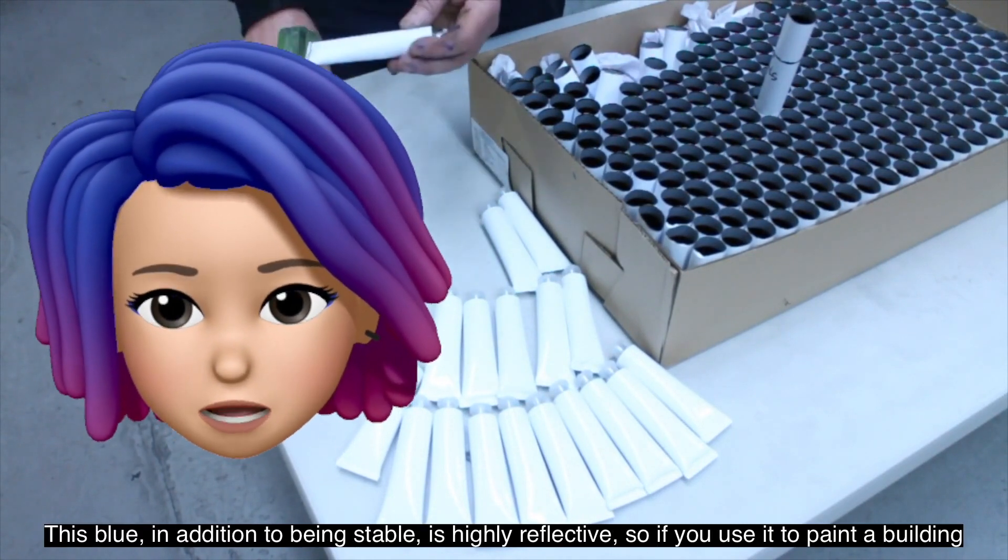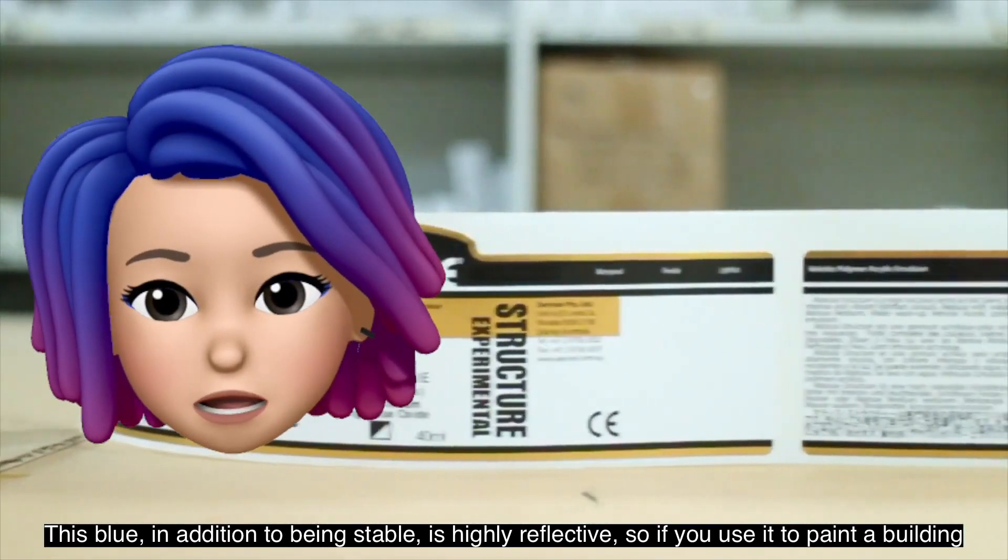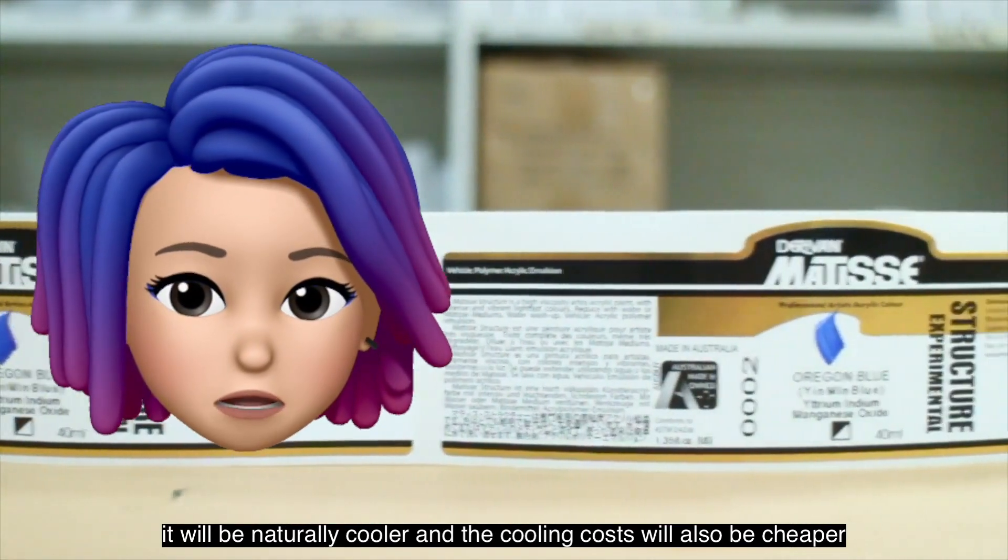This blue, in addition to being stable, is highly reflective, so if you use it to paint a building, it will be naturally cooler and the cooling costs will also be cheaper.